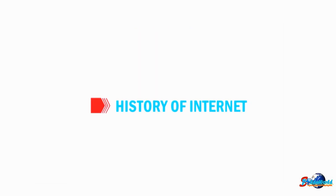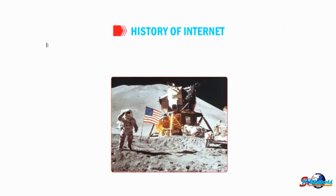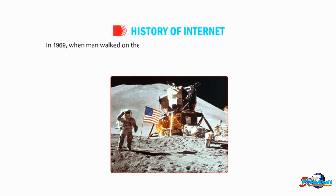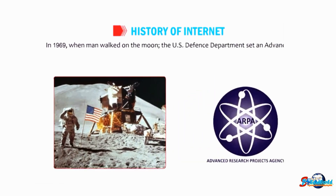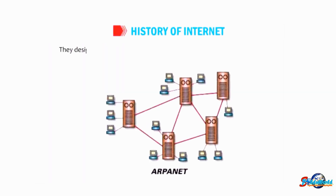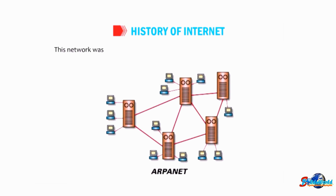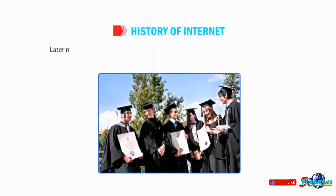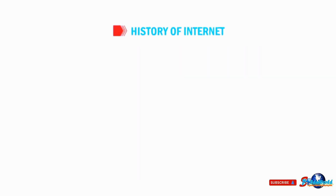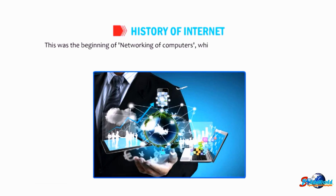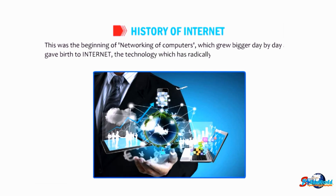Let us talk about the history of the internet. In 1969, when men walked on the moon, the US Defense Department sent an advanced research project agency, ARPA, for further research. They designed a network of four computers to exchange and share their data. This network was called ARPANET — Advanced Research Project Agency Network. Later, many universities were allowed to join this network and share information. This was the beginning of networking of computers, which grew bigger day by day and gave birth to the internet.